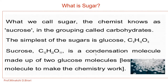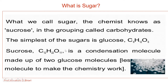Sucrose is a condensation molecule made up of two glucose molecules. The sugar industry is the second biggest industry of the country, the first being the textile industry. Cane sugar, also known as sucrose, having molecular formula C₁₂H₂₂O₁₁, is used all over the world as a sweetening agent. Cane sugar occurs in sugarcane, beet, wheat, maple, sweet sorghum, and some species of palm.